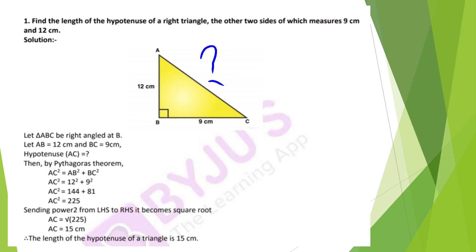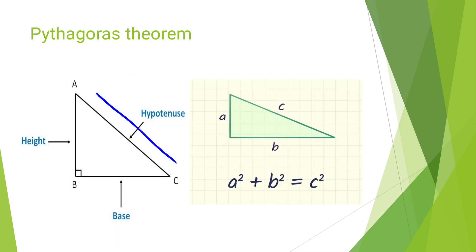AC² = 12² + 9² = 144 + 81 = 225. Taking the square root of both sides: AC = √225 = 15 cm. The length of the hypotenuse of the triangle is 15 cm. This confirms the Pythagorean theorem: a² + b² = c².